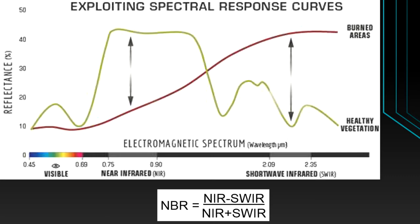Just opposite to this, in the short wave infrared part, leaves do not reflect much in healthy vegetation. But once an area is burned, the short wave infrared reflectance will start reflecting higher — above 40 or 45 percent. These two differences allow us to study the Normalized Burn Ratio.